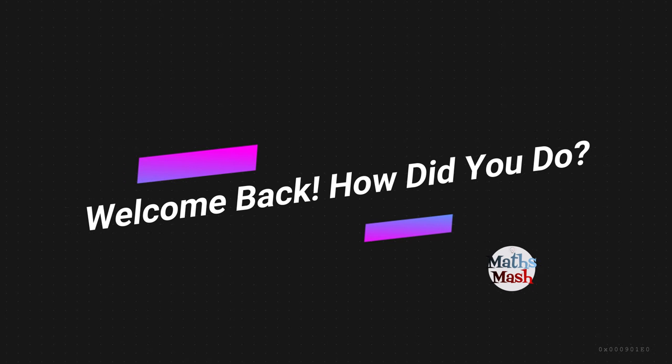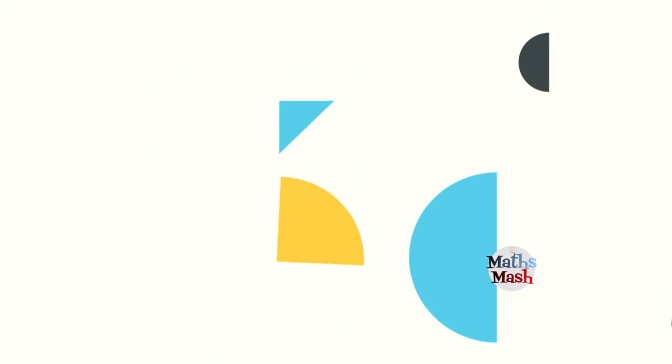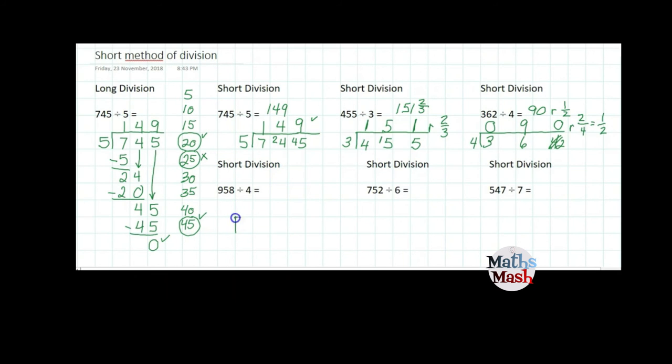How'd you do? I bet you did great. Okay here we go. So 958 divided by 4. My dividend goes inside. My divisor is on the outside. How many sets of 4 in 9? That's 2 with 1 left over.